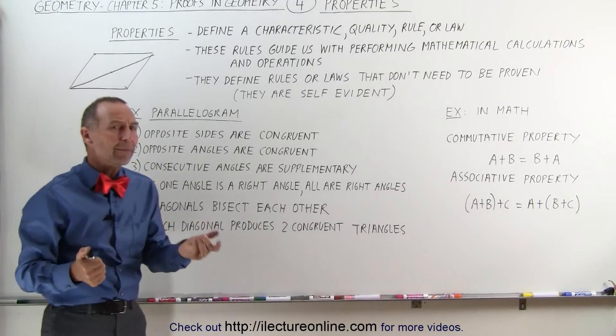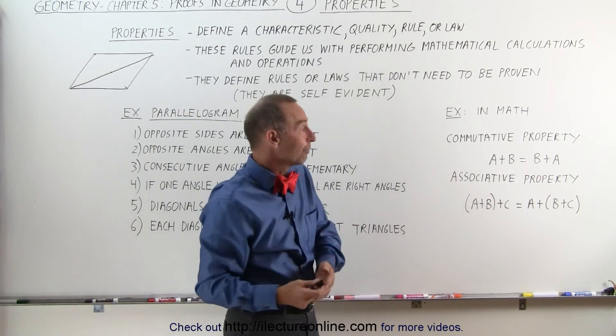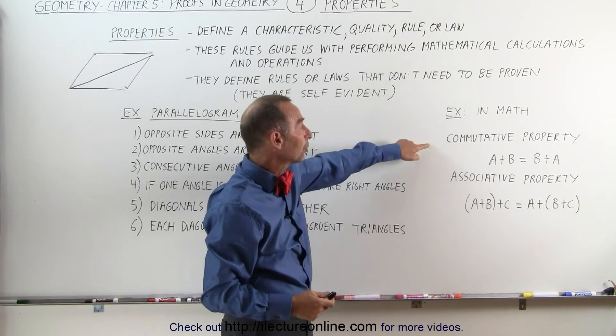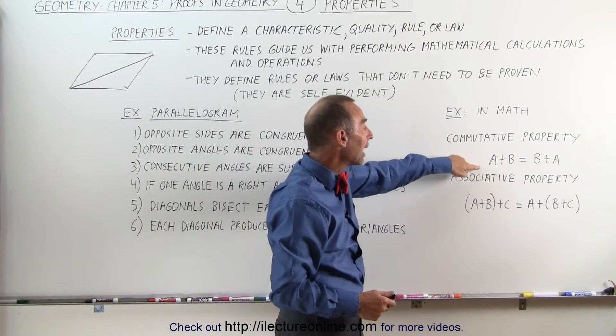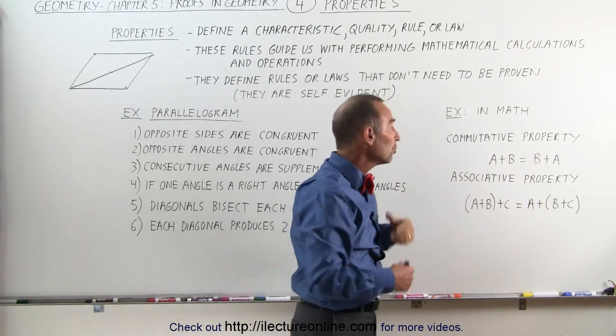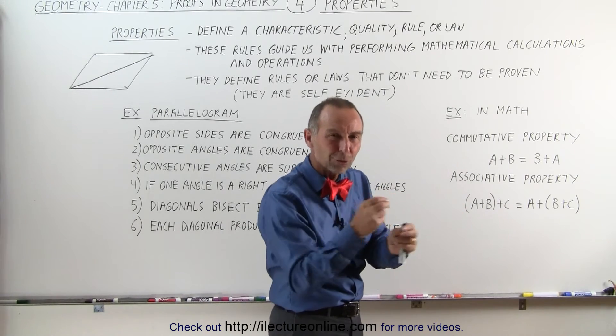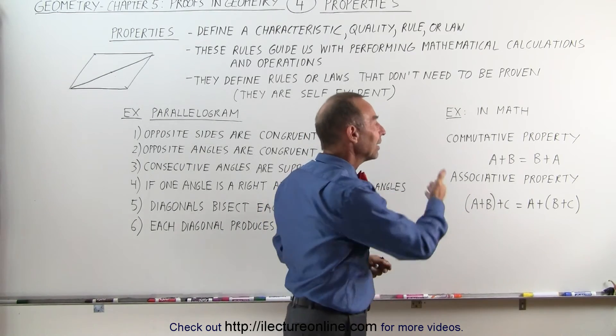When we deal with regular mathematics, we have some properties as well that you're probably already aware of and familiar with. For example, the commutative property. We can say that A plus B equals B plus A. That's the commutative property of addition. You can switch them around, you can commute, so to speak, A and B, and they're still equal.